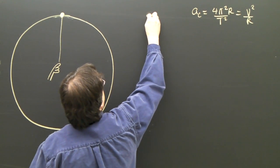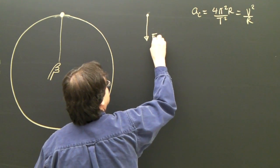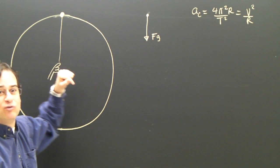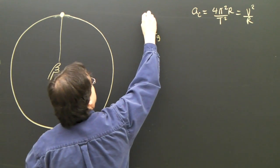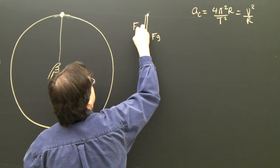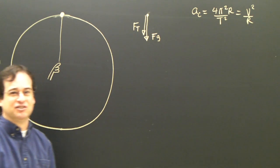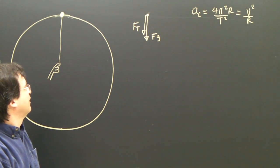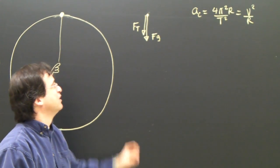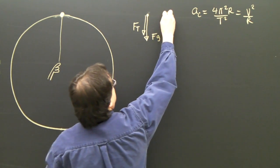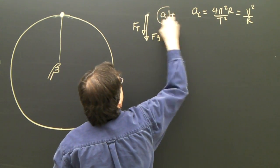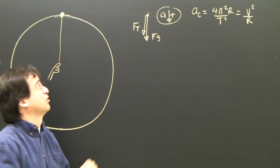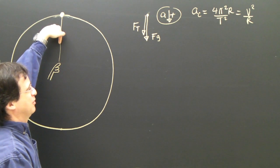Let's look at the top. Is there gravity? Yes. Is it sitting on a surface? No. Is something pulling on it? Yes — there's a rope, and you can only pull in the direction of the rope. The rope is pointing down, so we have F_T, tension. Is there friction? No, we're going to ignore friction. So this is the free body diagram at the top, and at the top it's accelerating down, because objects going in a circle accelerate towards the center of the circle. At this point the center is below, so it's accelerating down.